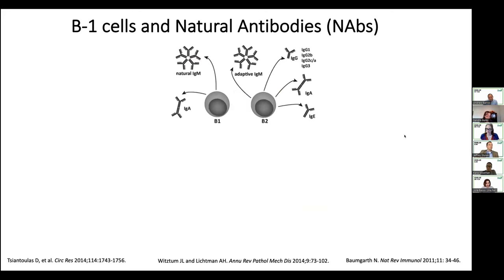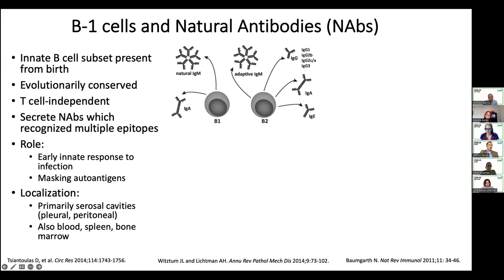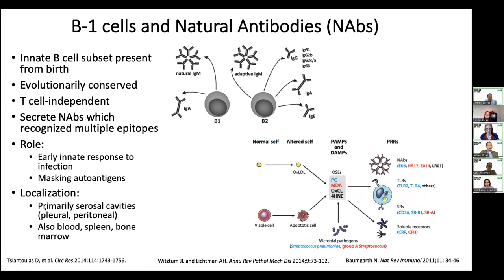The type of cells we focus on are B1 cells. If you recently got a vaccine, it's the B2 cells that are really active — those are the classic adaptive B cells everyone learns about. B1 cells are on the other side of humoral immunity. We think they make mostly natural IgM and some IgA that we consider to be protective from various types of inflammation. They're evolutionarily conserved across species. These antibodies bind lots of different epitopes including auto-antigens and infections, and they localize to the serosal cavity — the pleural cavity, the space around the outside of the lung.